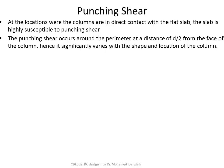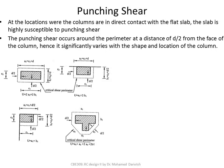The punching shear failure plane significantly varies with the shape and location of the column. For an interior column, failure occurs along D over 2 from the whole perimeter. For an edge column, you are talking about three sides. For a corner column, only two sides.